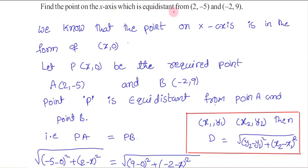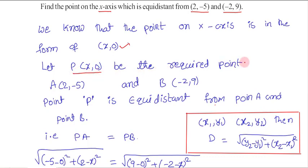Find the point on the x-axis which is equidistant from the point A(2, -5) and B(-2, 9). We know that any point on the x-axis is in the form x comma 0. So I am supposing that P(x, 0) is the required point, with A(2, -5) and B(-2, 9). P is the point which is equidistant from point A and point B.